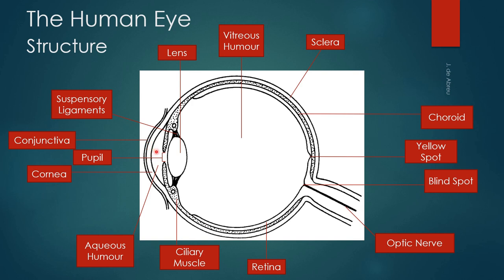Just beneath or behind the cornea is the aqueous humor, which is a substance that fills that space. And then there's the pupil, which is literally a hole in your eye — there's nothing there. And then you have your lens.